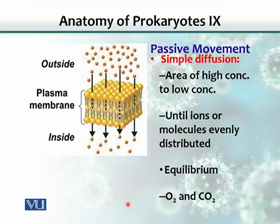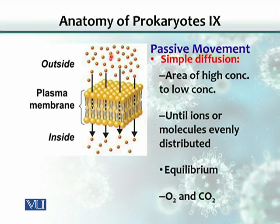Passive movement comes in two forms. One is simple diffusion, where molecules move from higher concentration to lower concentration. When the concentration across the two sides of the membrane becomes equal — what we call equilibrium — there is no net movement. Molecules keep moving, but the number going each way is equal, so net movement is zero. Oxygen and carbon dioxide are examples of simple diffusion.